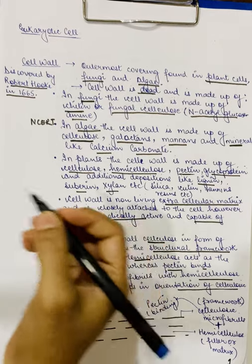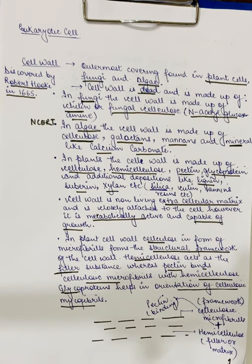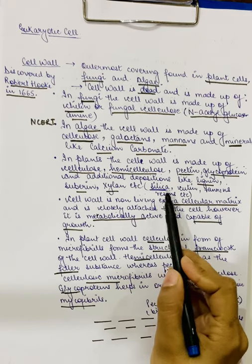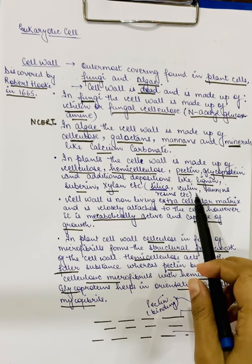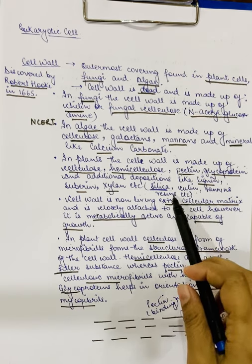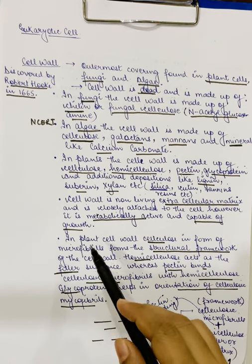Silica is found in the epidermal cells of grasses. If you have ever plucked grasses, the edges are sharp and sometimes you get a cut because of those sharp edges — that is because of the presence of silica in their epidermal cells. Cutene is present in the epidermal cells to create a cuticle layer over the leaves, and because of the cuticle, excessive transpiration is prevented from the leaves. There might also be tannins and resins, which are the excretory substances secreted by the cell.